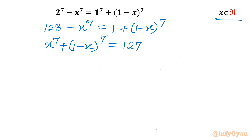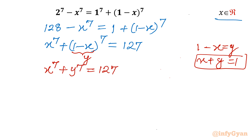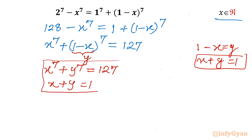Now I will use substitution. Let 1 minus x equal to y, so we can write x plus y equal to 1. The equation becomes x^7 plus y^7 equal to 127. The second equation is x plus y equal to 1. This is our system of equations for which we will find x and y.